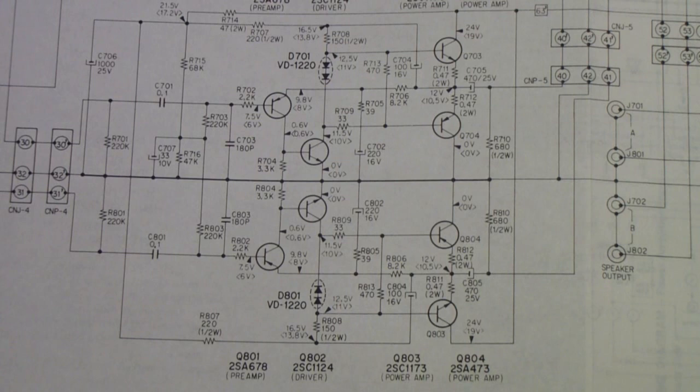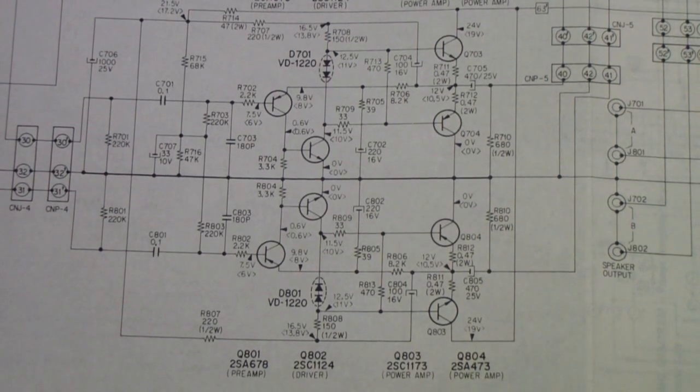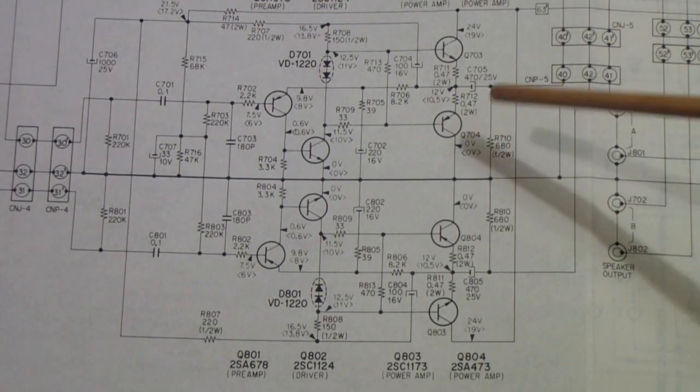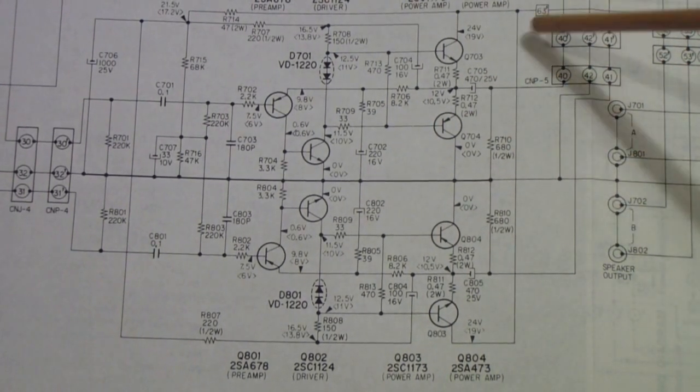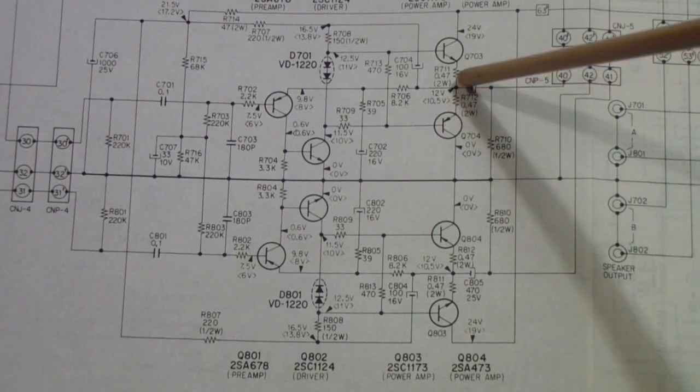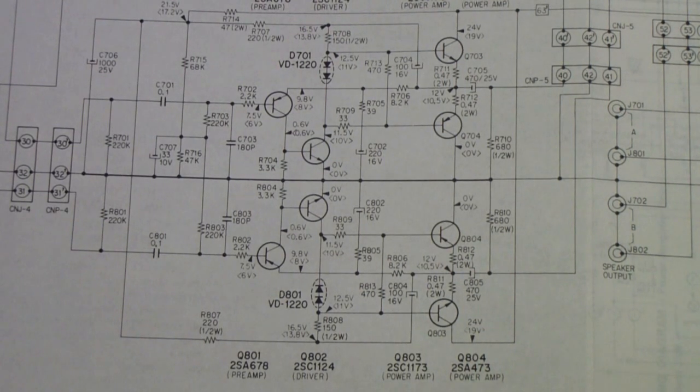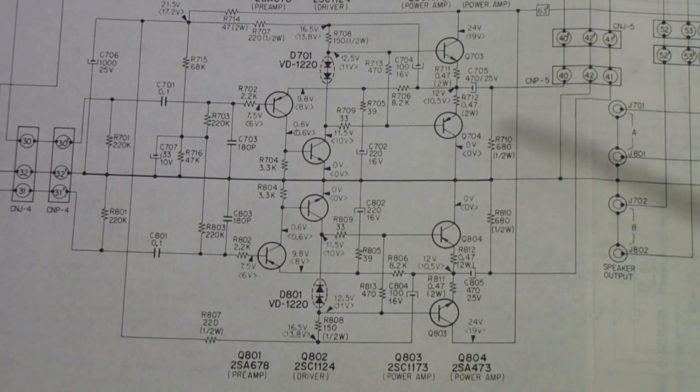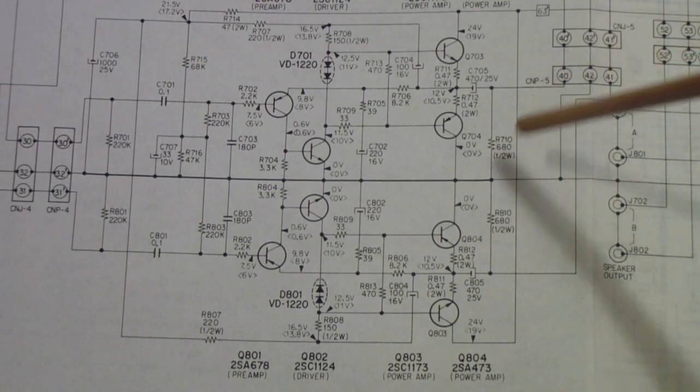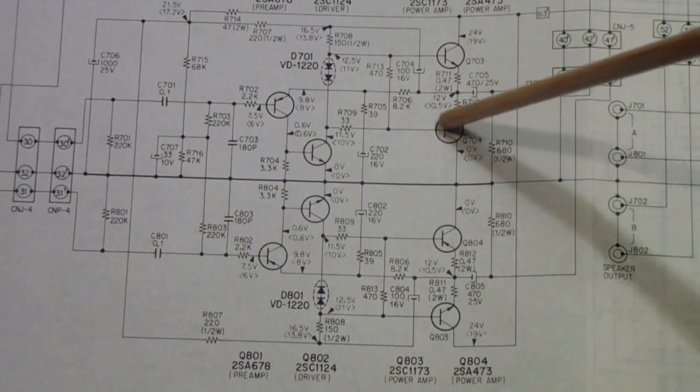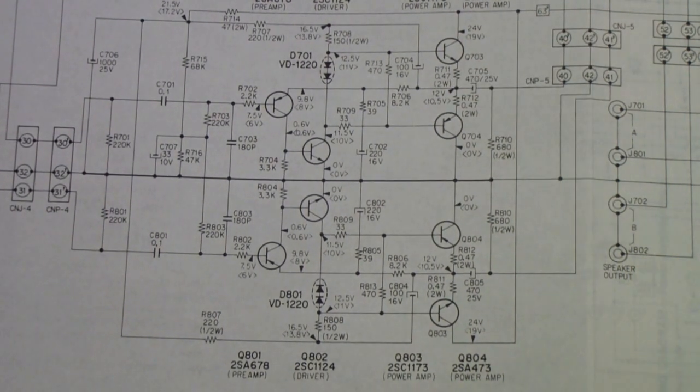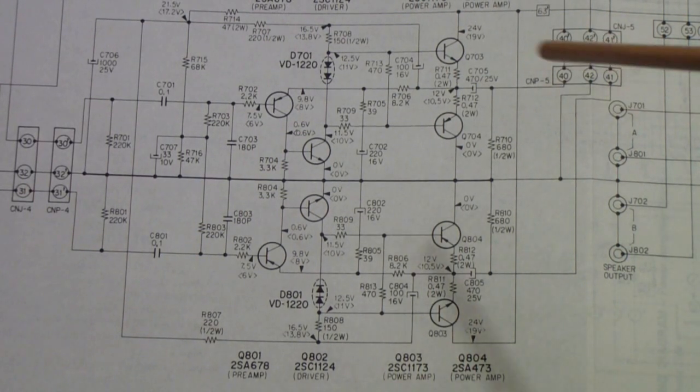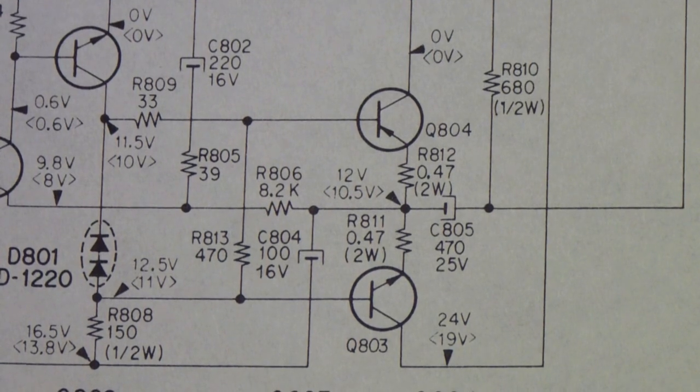Here is the schematic of a Sony HP 178 from 1976 illustrating the complementary symmetry output stages. This one is a little different because it does use a capacitor in the output. The problem with using the capacitor is it limits your frequency response particularly the low frequencies. However the advantage of having the capacitor in the output is that it does protect your speakers from DC bias.